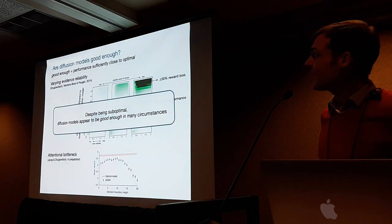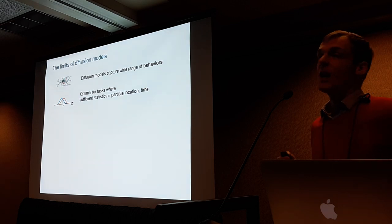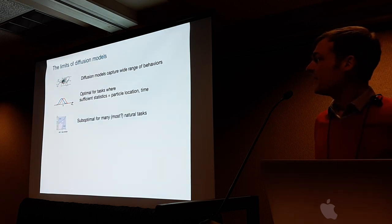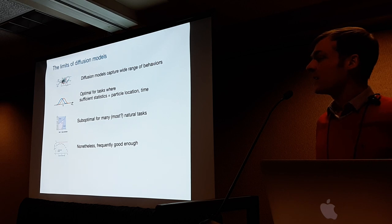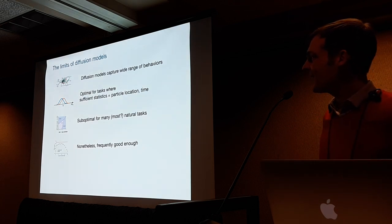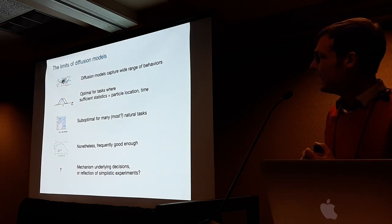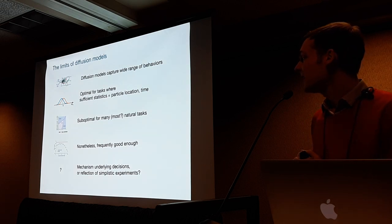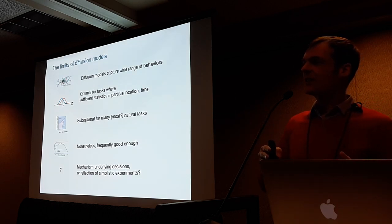To summarize: diffusion models capture a wide range of behavior and are optimal for tasks in which the sufficient statistics for accumulating evidence are particle location and time. But they are suboptimal for many — and I would argue most — natural tasks. Nonetheless, they are frequently good enough. The open question is how universal that property is, which is very hard to answer because it requires knowing the distribution of possible tasks that animals and humans actually need to solve. It could also be that what we observe is just a reflection of simplistic experiments, since telling a complex strategy from a simple one turns out to be very hard.